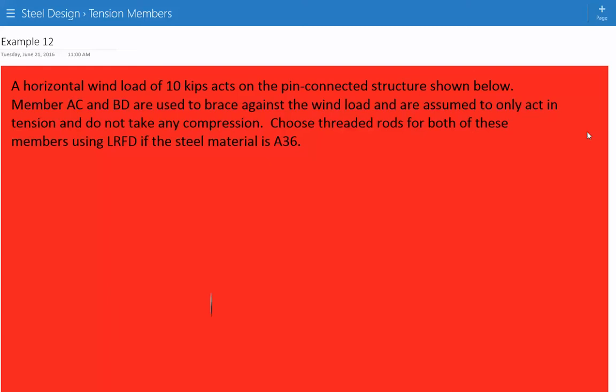Member AC and BD are used to brace against the wind load and are assumed to only act in tension and do not take any compression. We need to choose threaded rods for both of these members using LRFD if the steel material is A36 steel.